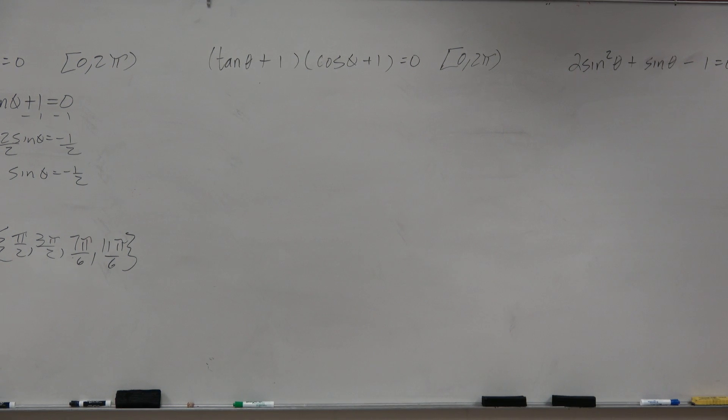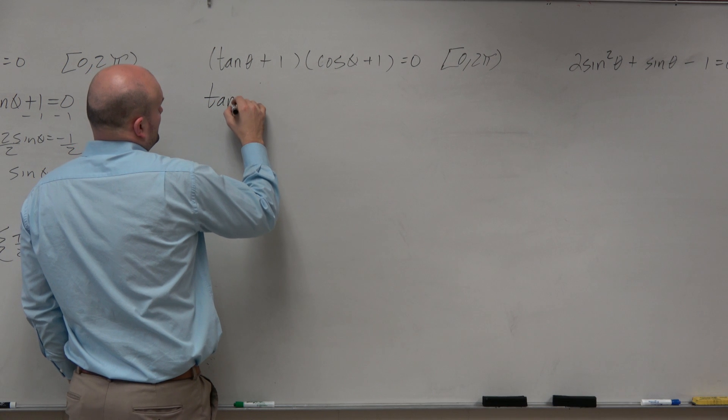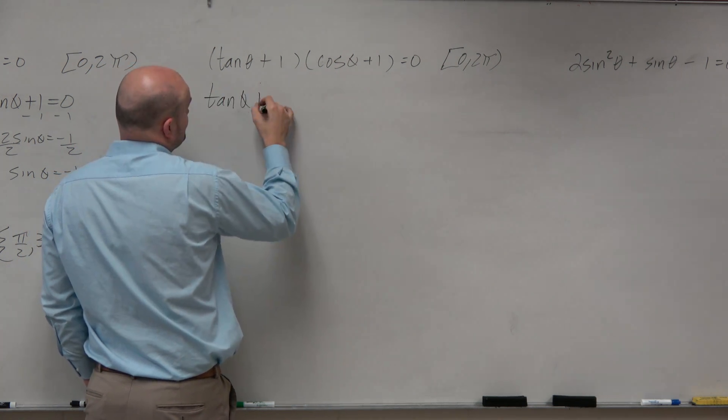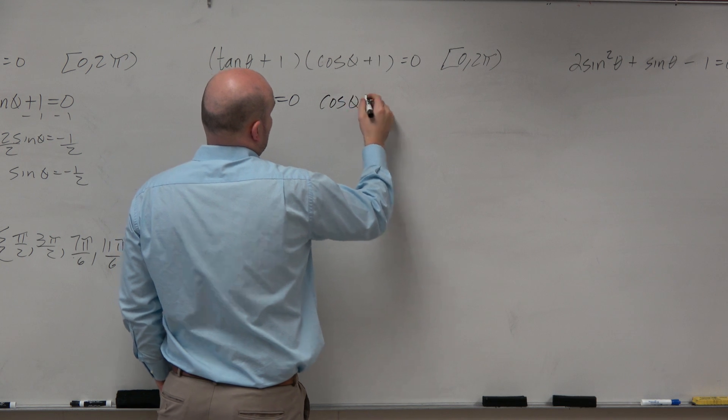Another one. Again, this one guys. Zero product property, set them equal to 0. Tangent of theta plus 1 equals 0. And cosine of theta plus 1 equals 0.